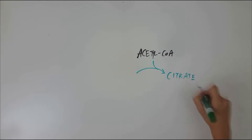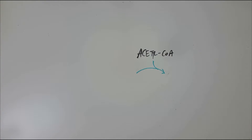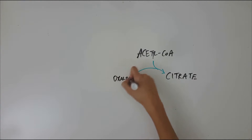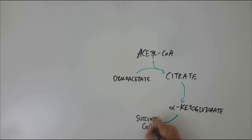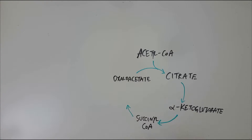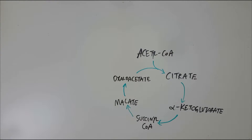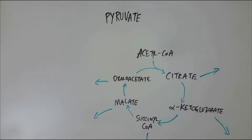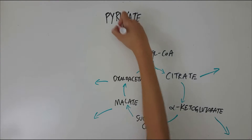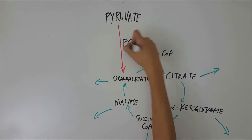The TCA cycle is amphibolic in nature, meaning it is involved in the synthesis and breakdown of metabolites. Anaplerosis is a process which replenishes the TCA cycle intermediates used up in anabolic processes. One of these anaplerotic reactions is the conversion of pyruvate to oxaloacetate, which is catalyzed by pyruvate carboxylase.